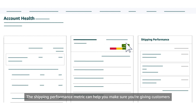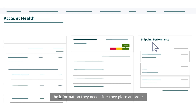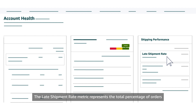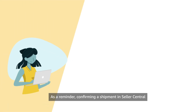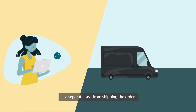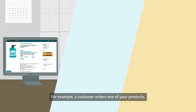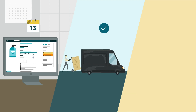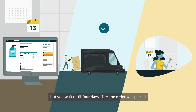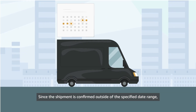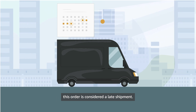The shipping performance metric can help you make sure you're giving customers the information they need after they place an order. The late shipment rate metric represents the total percentage of orders that you confirmed after the order's expected shipping date. As a reminder, confirming a shipment in Seller Central is a separate task from shipping the order. For example, if a customer orders a product which you've indicated will ship within three days, and you ship it within that time frame but wait until four days after the order was placed to confirm the shipment in Seller Central, that order is considered a late shipment.